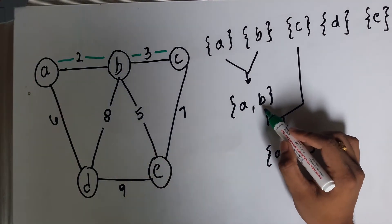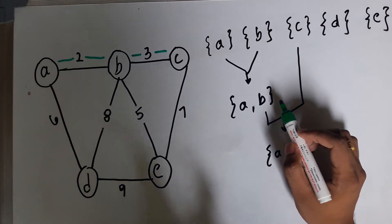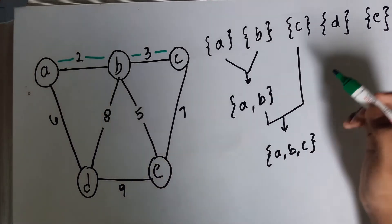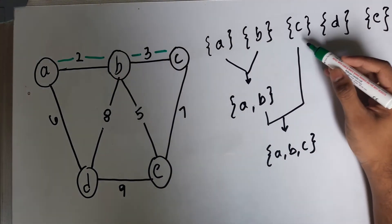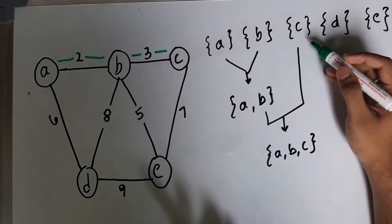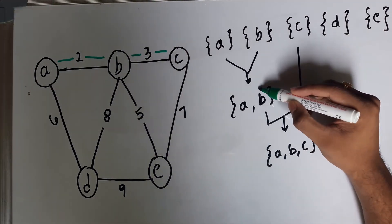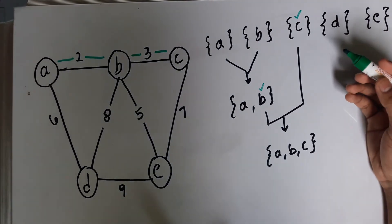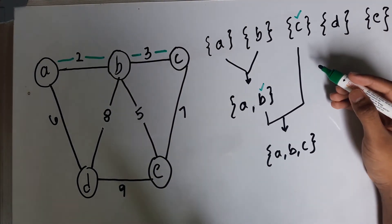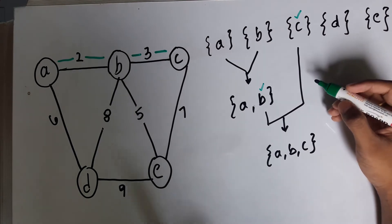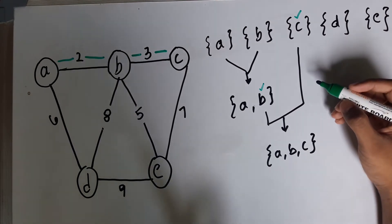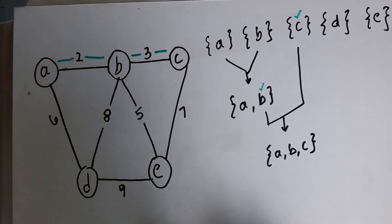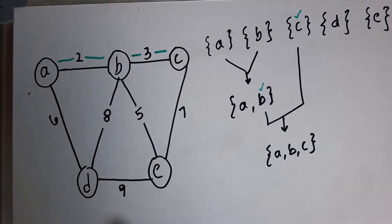We check if the representative of the set that B belongs to is the same as the representative of the set that C belongs to. Here B's representative is B and C's representative is C — they are not the same, so we conclude that B and C are not in the same set. We successfully merge them and add edge B-C to the global set A.